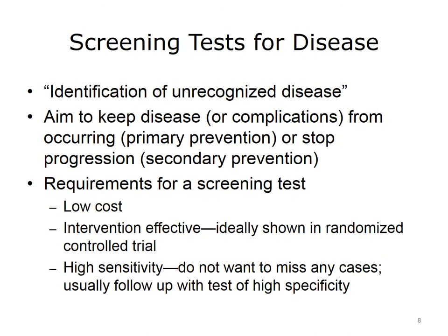Screening is related to diagnosis, but is not quite the same. Screening is the identification of unrecognized disease. What we hope to do with screening is recognize disease so we can intervene at an early stage — either to keep the disease or its complications from occurring, sometimes called primary prevention, or to prevent complications from developing when the disease is already present, sometimes called secondary prevention. What are the attributes of a good screening test? It should have a low cost because we typically apply screening to large numbers of people. A good screening test has to lead to an effective intervention, ideally documented by a randomized controlled trial. Finally, the test should be of high sensitivity because we don't want to miss any cases or have any false negative cases. A positive screening is usually followed up with a test of high specificity to make sure the screening result isn't a false positive.